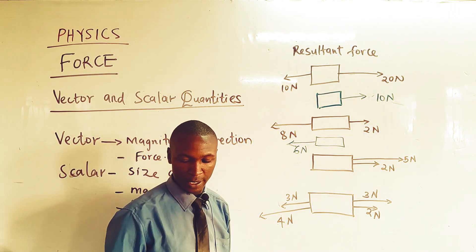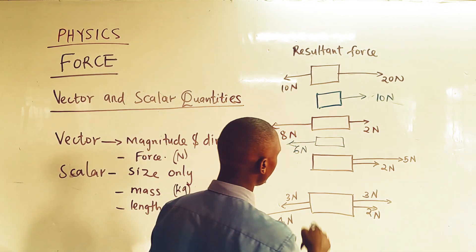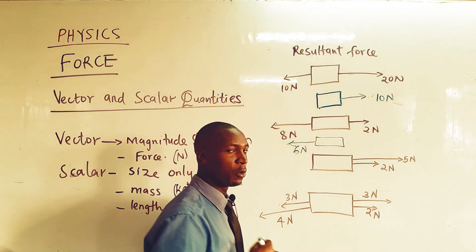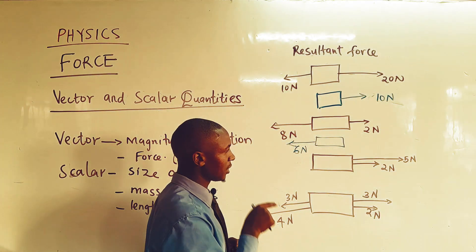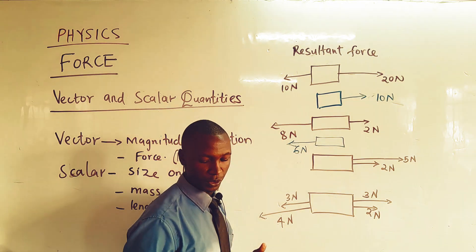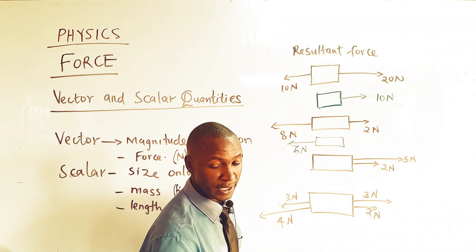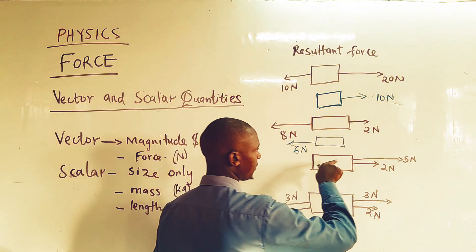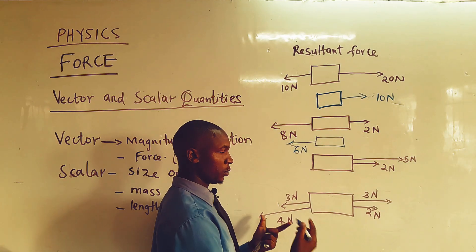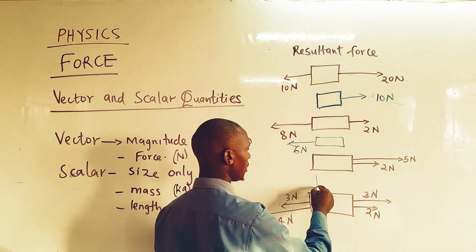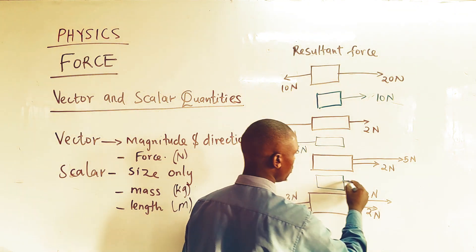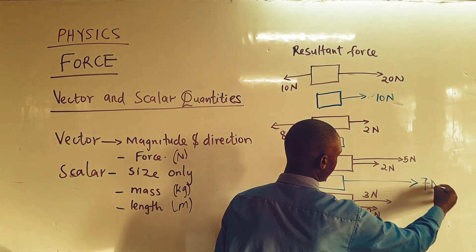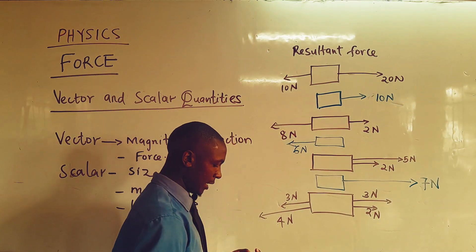In the third example, we have two forces — 5 newtons and 2 newtons — moving towards the same direction. When forces move in the same direction, we add them together. Therefore, 5 plus 2 gives us 7 newtons, represented by a longer arrow.